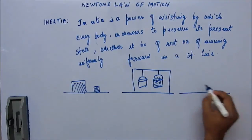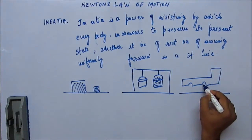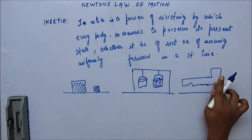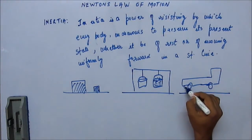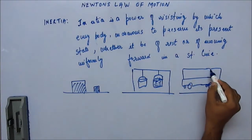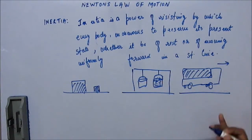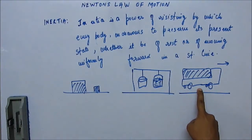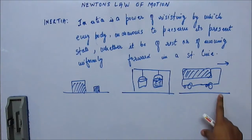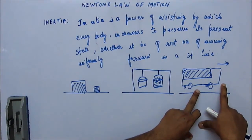A common example you must have experienced: suppose there's a truck fully loaded with heavy material, maybe iron, and this truck is moving. When you see these heavy trucks on highways, you don't mess with them. If they want to overtake, you let them go. You don't come in their path, because if you suddenly appear in front of these trucks, even if the driver wants to stop, there is a problem.